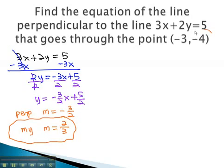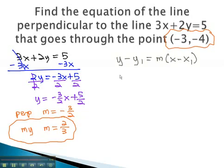Using my slope and the point we want to hit on the line, we can find our equation from y minus y1 equals m times x minus x1. Plugging in our key information, y minus negative 4 becomes plus 4, equals 2 thirds times x minus negative 3 becomes positive 3.